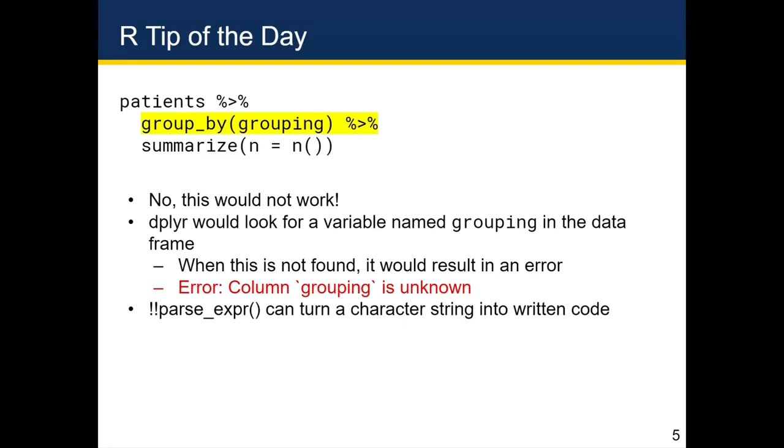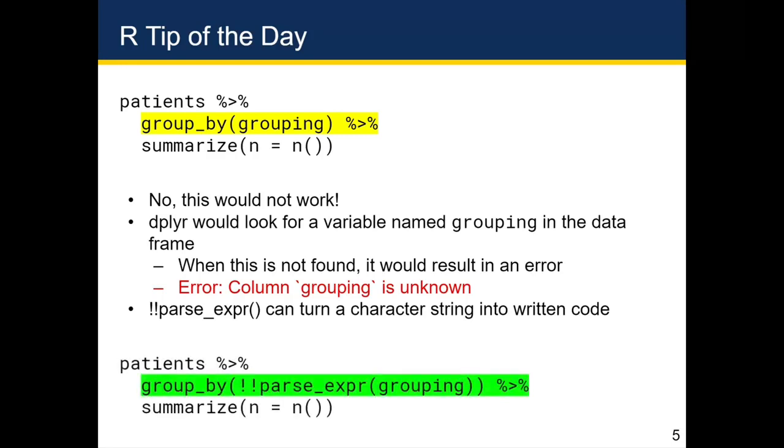And the parse expression function can turn a character string into written code as if you had typed it out. So if you replaced patients then group by grouping then summarize N equals N with patients then group by parse expression grouping then summarize N equals N. And what this would tell dplyr to do is to look at the value inside of the grouping variable, which is pay type in quotes, to actually type in pay type, removing those quotes, and pretend you had just had group by pay type, which was that first piece of code that we had, which worked.